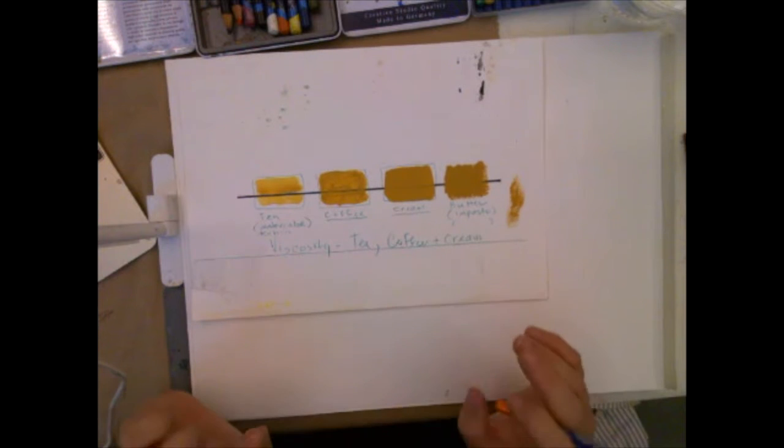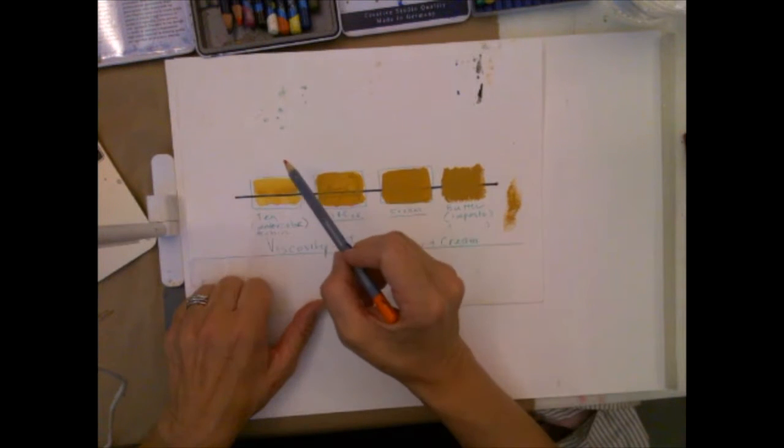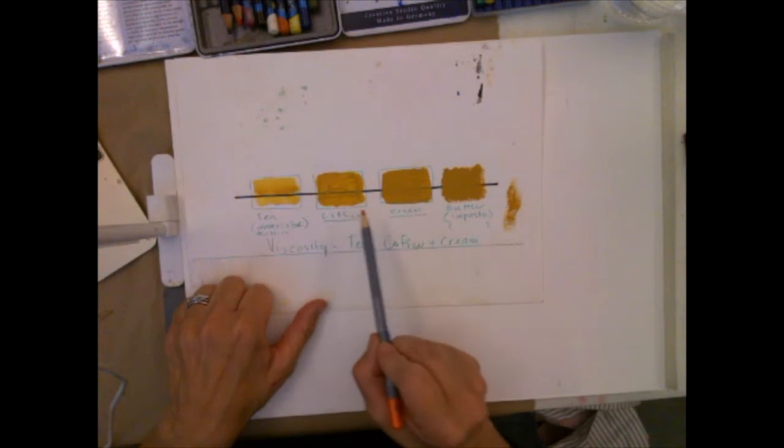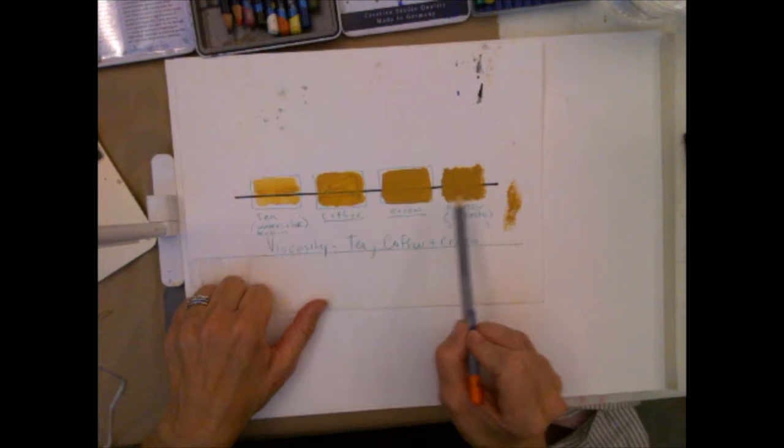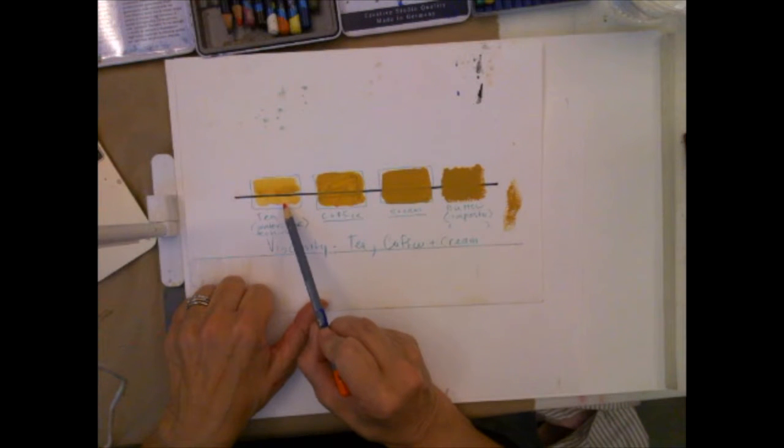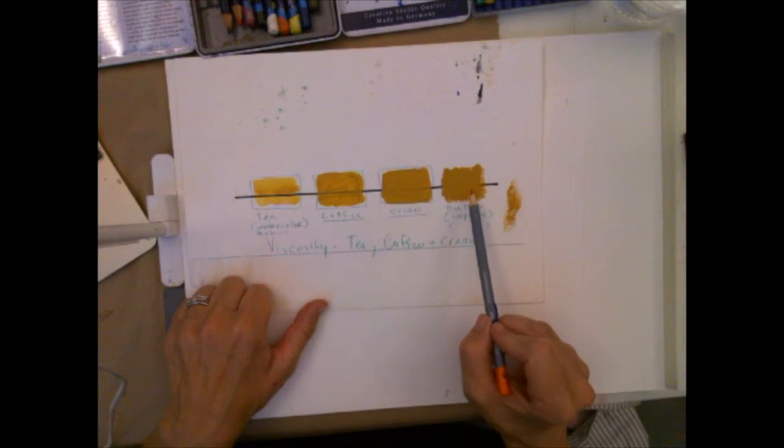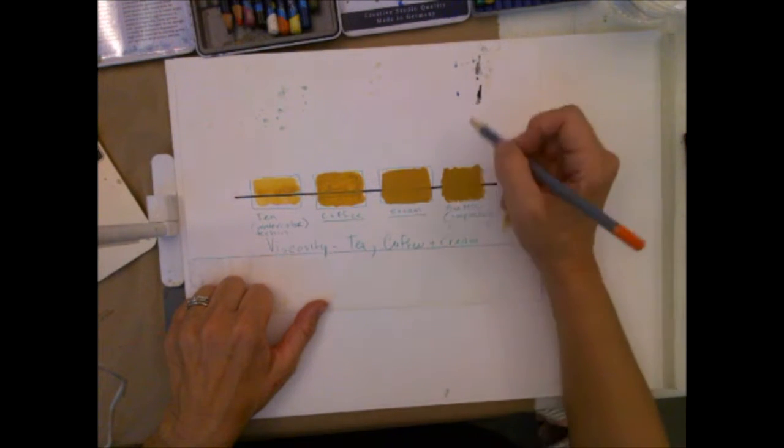So the first thing is just to learn what this means. When you are painting with some of these pigments, you're going to see either high transparency, low transparency, or opaqueness. We call this opaque.